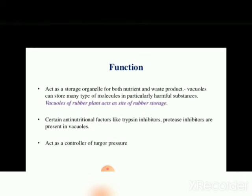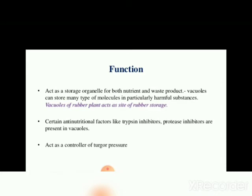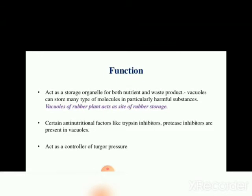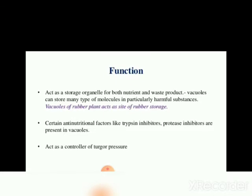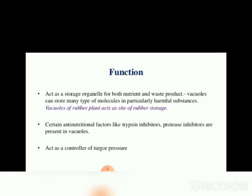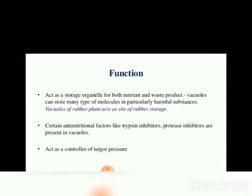The second function is maintaining the turgidity of the cell. The main role of the vacuole is to maintain turgor pressure against the cell wall. Tonoplasts allow the central flow of water into and out of the vacuole through active transport. Due to osmosis, water will diffuse into the vacuole, placing pressure on the cell wall. Water loss leads to a decline in turgor pressure, and the cell will plasmolyze.